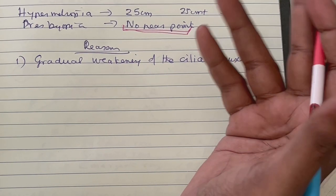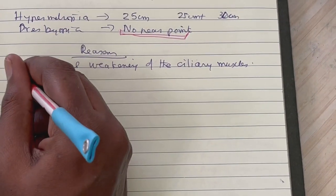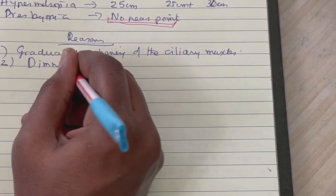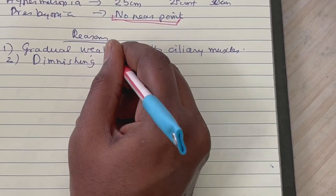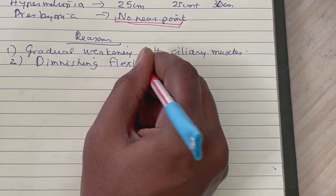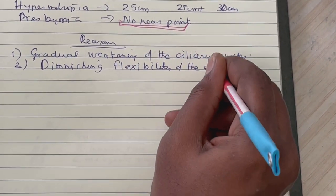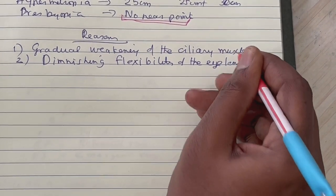And the second is the diminishing flexibility of the eye lens. So these are the two reasons, the prime reasons for presbyopia.